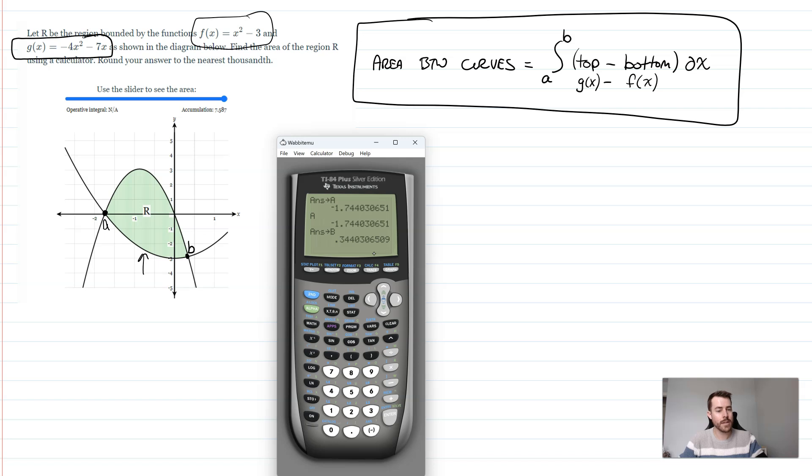Now this is really easy here, because all we have to do is type this right into our calculator. So I'm going to hit math, and then you hit nine, or you could scroll down to number nine, where it says fn int. It will pull up the integral here. Now we can just say from A to B. So alpha A to alpha B.